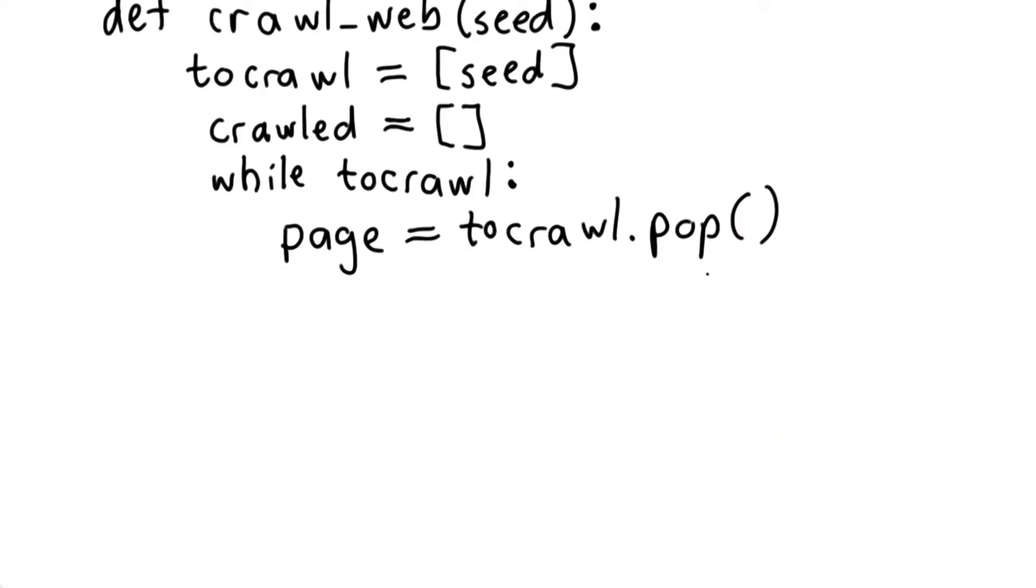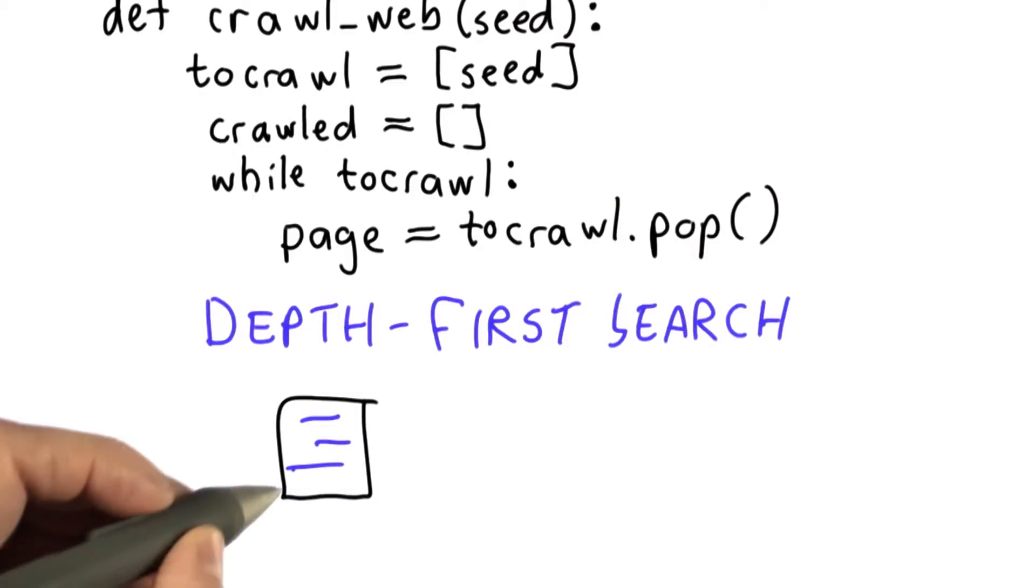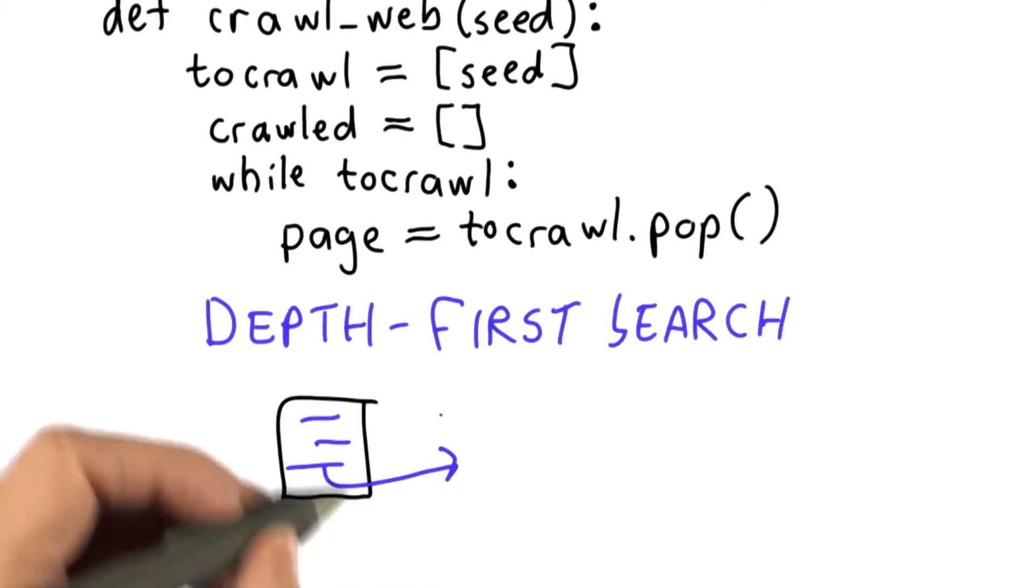One important point to note is because we're getting the last element first, what we're implementing is what's called a depth-first search. And that means that as we crawl webpages, if we had three links on the first page, well, what's going to happen is we're going to follow that last link.